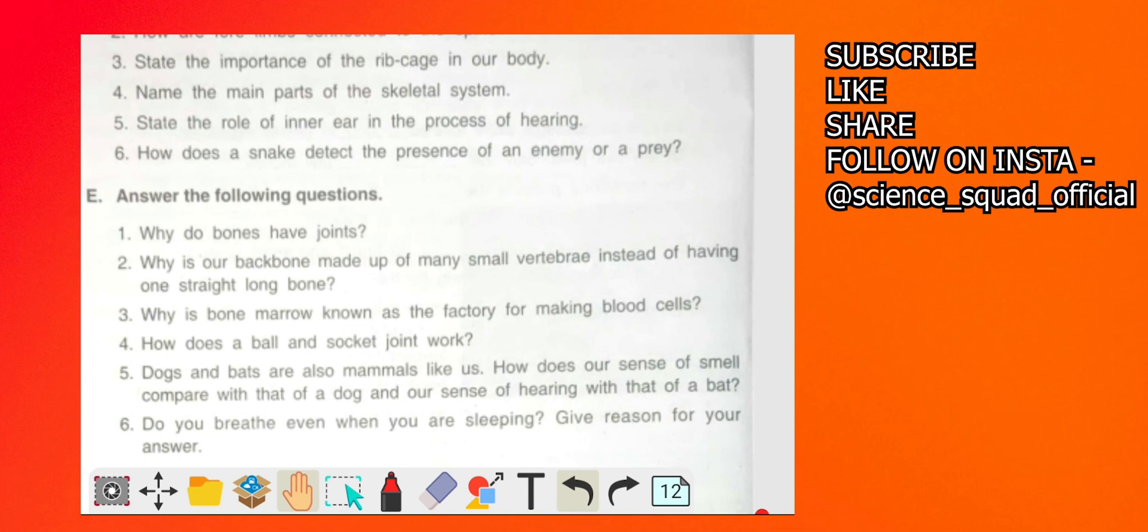Yes, they both are mammals. And the dog has a better sense of smell because of which it can detect the presence of any unknown person or any unknown of thief or someone. And bats, they have a very high - they can hear very high pitch sound that is known as ultrasonic sounds.